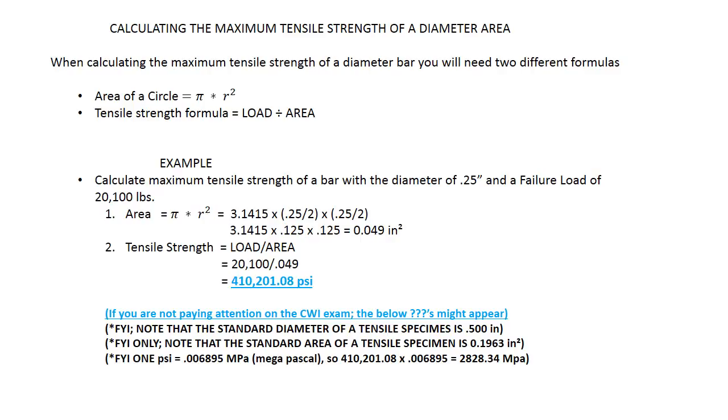Take a second and look at the notes below because it can get confusing. Note that the standard diameter of a tensile specimen is 0.5 inches, but the standard area is 0.1963 square inches. Make sure you read those questions correctly.